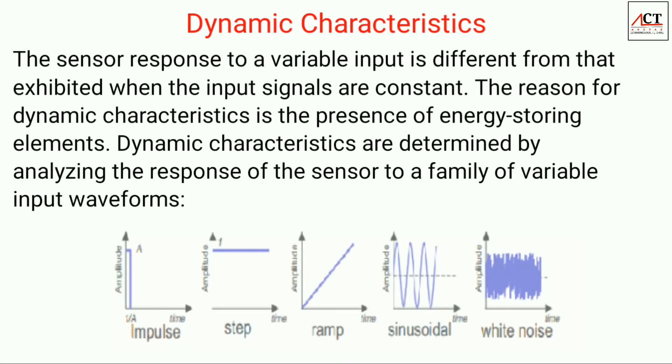The next type of characteristics of sensor is the dynamic characteristics. Dynamic characteristics are the characteristics which are due to the presence of energy storing elements, and they exist when the input signals are varied. For example, here we can see dynamic characteristics are determined by analyzing the response of sensor to different types of variable input waveforms like impulse, step, ramp, sinusoidal, etc.